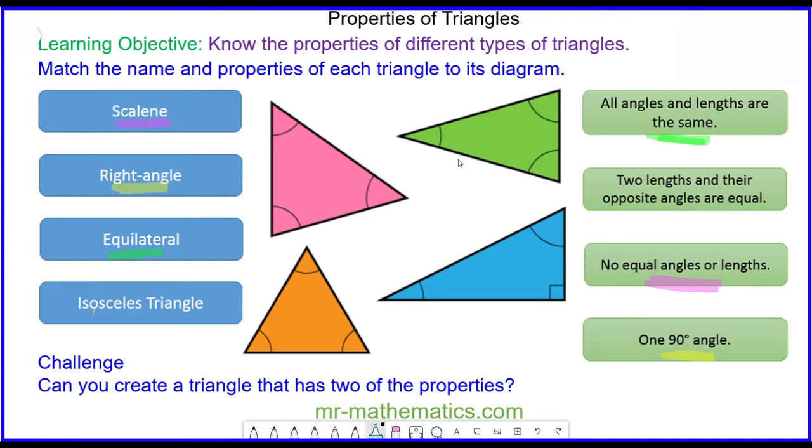An isosceles triangle has two lengths that are equal. And because the two lengths are equal, their opposite angles are also equal. So this would be this descriptor.